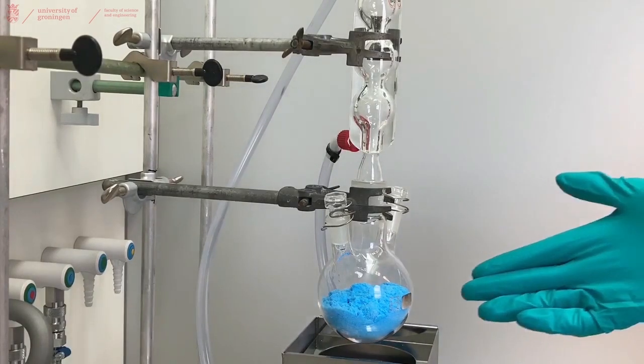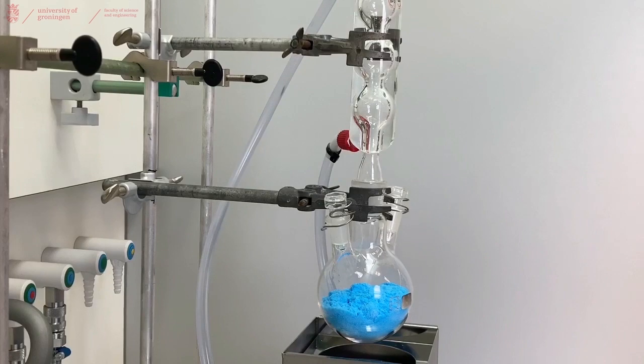We're going to recrystallize blue copper sulfate using water. I have a rough estimation about how much solvent I will need, which is about 100 ml.